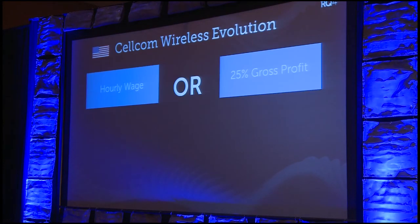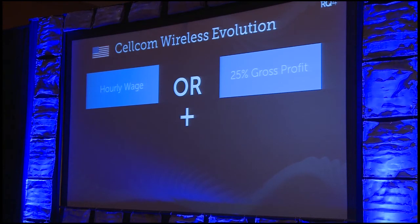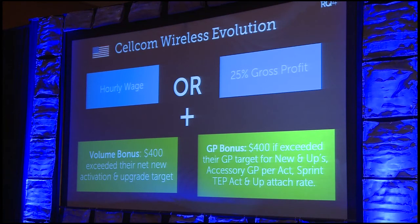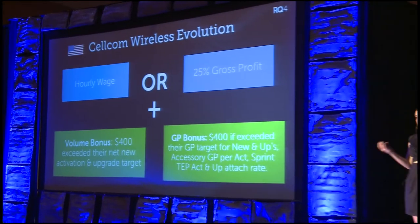In the US, Cellcom stores get an hourly wage dependent on the state, plus 25% of gross profit — similar to the Canadian plan. What's different is they have two volume bonuses: meet your quantity targets and get a $400 lump sum, and meet your gross profit target and get another $400. So in the US, you get your base 25% plus the potential of $800 more in bonuses.